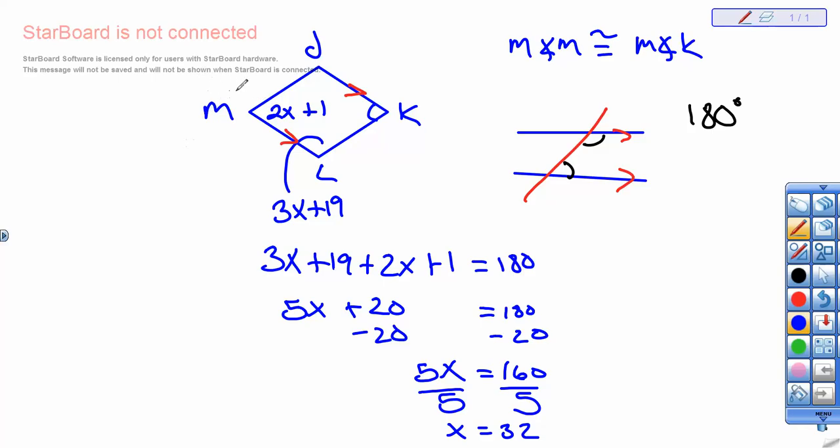So now that we know that x is 32, we're going to find m, because if we find m, then we can find k. So 2 times 32 plus 1. So that gives us 64 plus 1. So the measure of angle k is equal to 65 degrees. And then we're done.